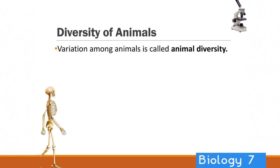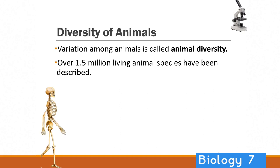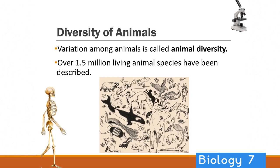The variation among animals is called animal diversity. They vary in a lot of ways including size, shape, their behaviour, and many other characteristics. There are over one and a half million living animal species which have been described, and potentially many hundreds of thousands more that are yet to be described or may have previously existed on this planet.